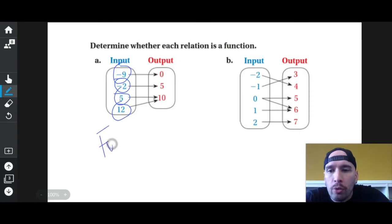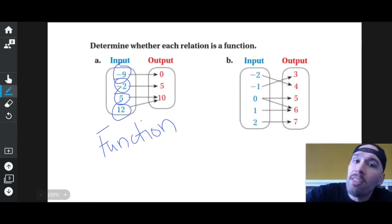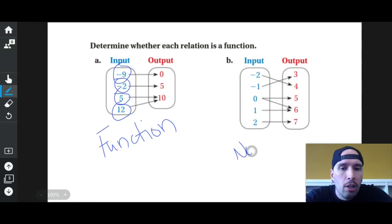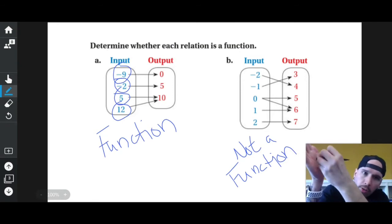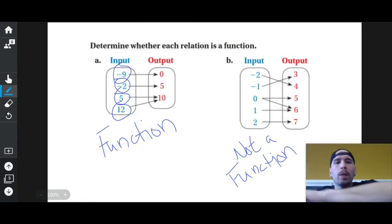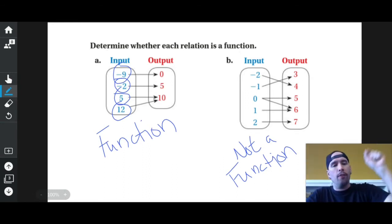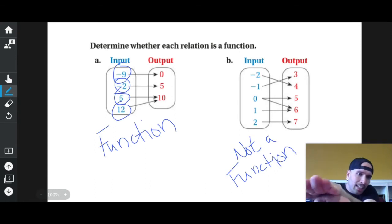This guy on the other hand is not a function. If I have five darts labeled negative two, negative one, zero, one, two, and I were to throw negative two it would get me four points, negative one would get me three points, and this is where it gets weird. If I throw zero it will split in half and hit two different targets, five and six, which is impossible. You can't do that. Zero cannot go to two different places.